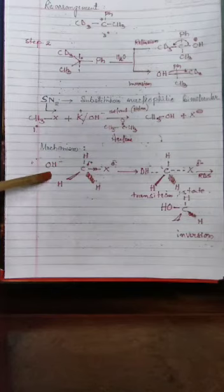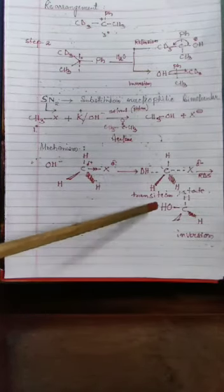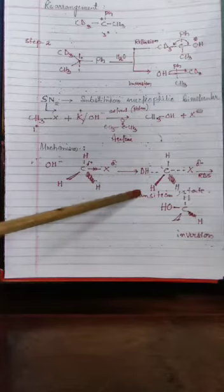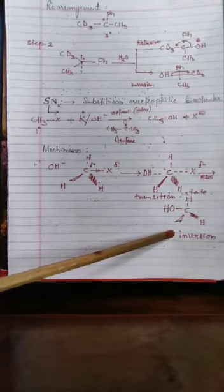After finishing SN1, now we will do SN2 — substitution nucleophilic bimolecular. Example: methyl halide reacts with KOH (potassium hydroxide) in the presence of acetone (a polar aprotic solvent), giving methanol and X⁻. Mechanism: OH⁻ attacks CH3-X; we get a transition state (not a stable state) and then the final product. The stereochemistry of the product is inversion.